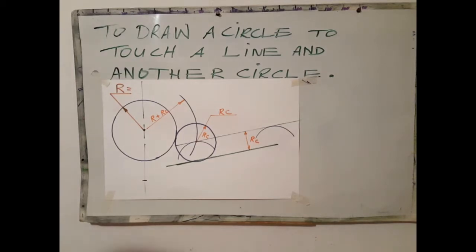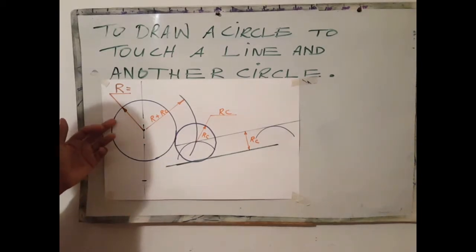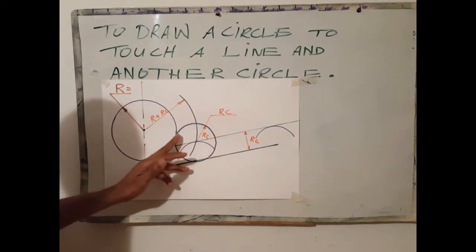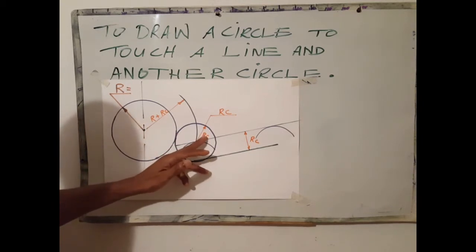Here we have a graphic representation. In this case you have a circle of radius R and a line here being blended by a circle having a radius Rc.